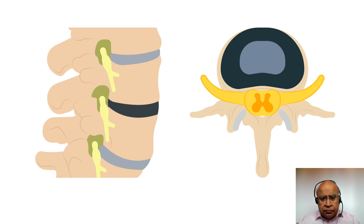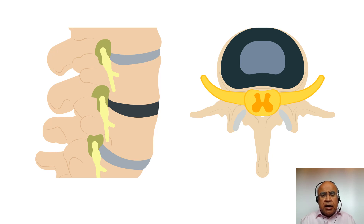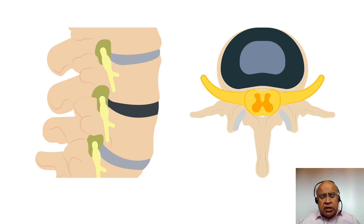For back pain, the best solution is to build up the core muscles of the spine. The muscles that surround the spine are the soldiers that protect it and they need to be kept healthy. Continue to view our videos which give details on core stability.